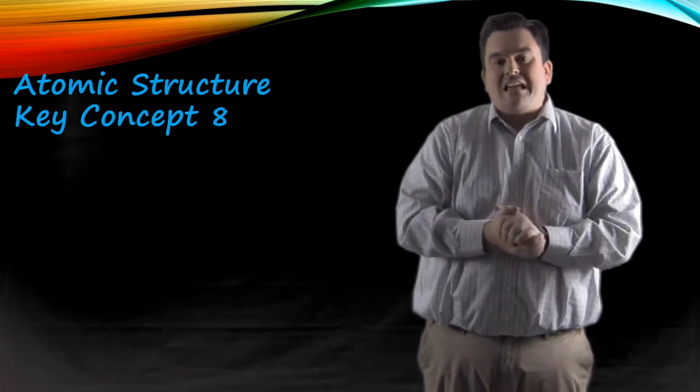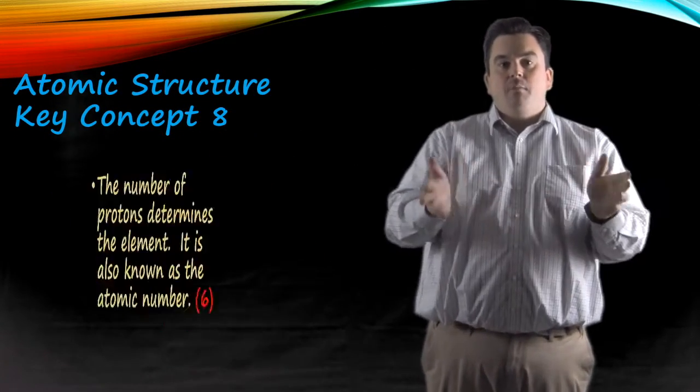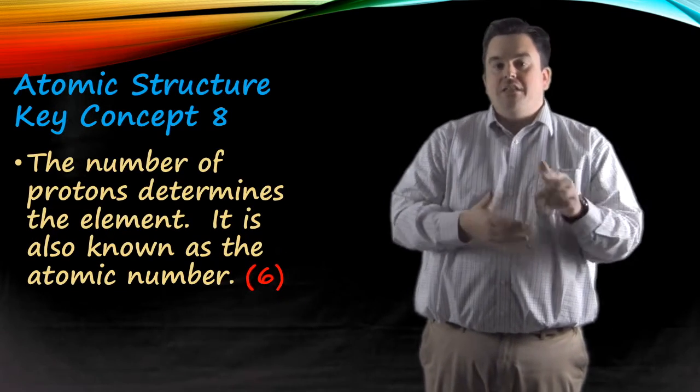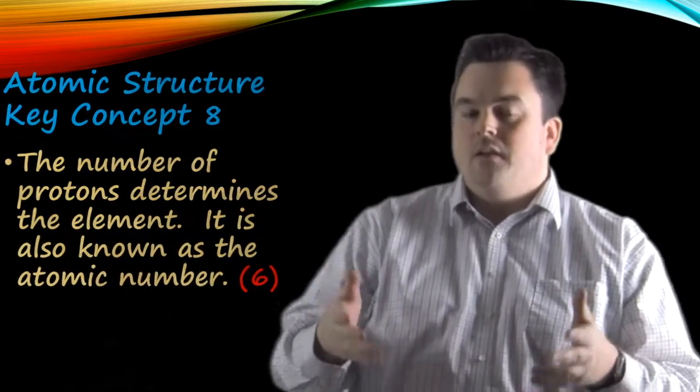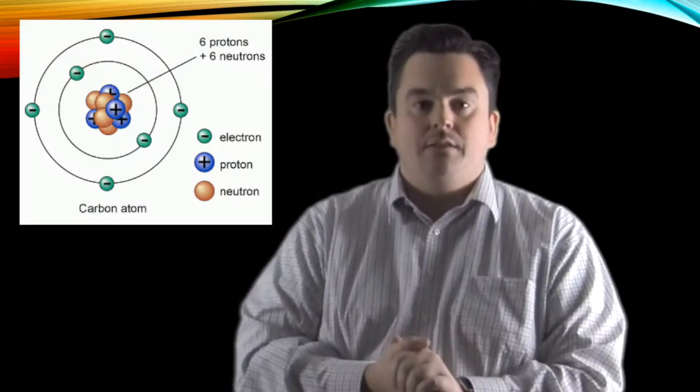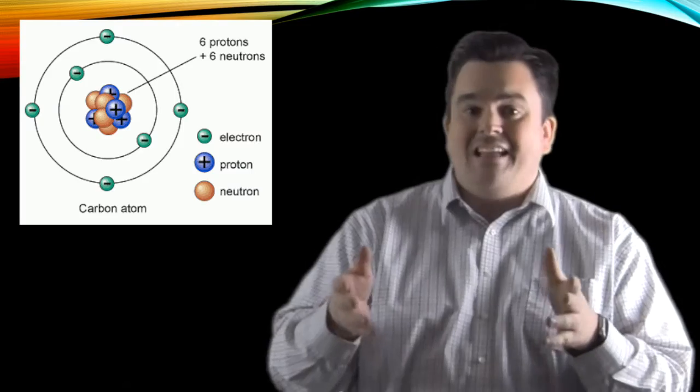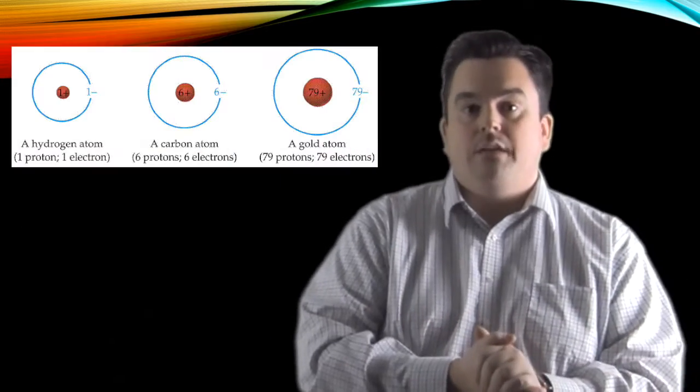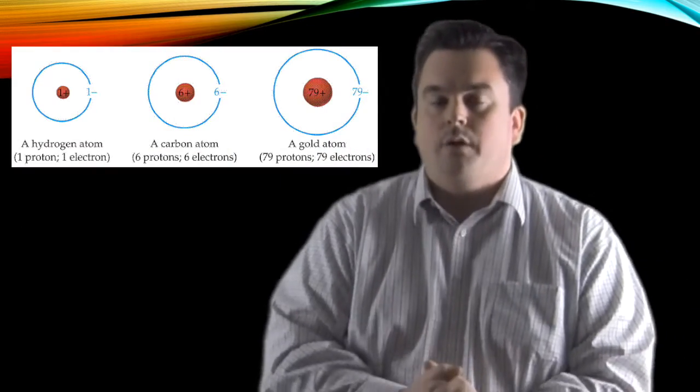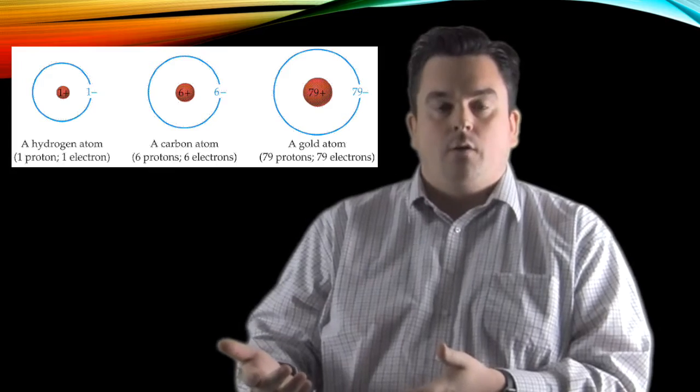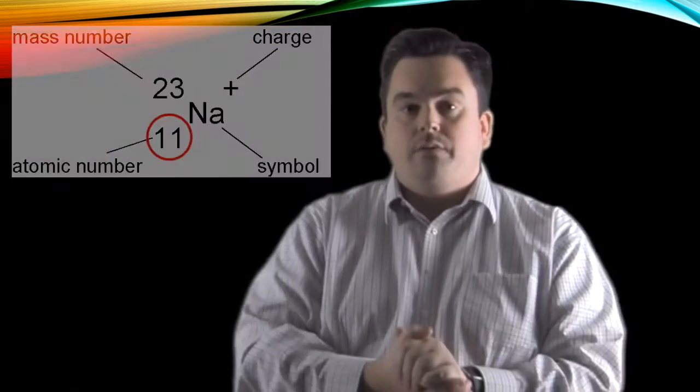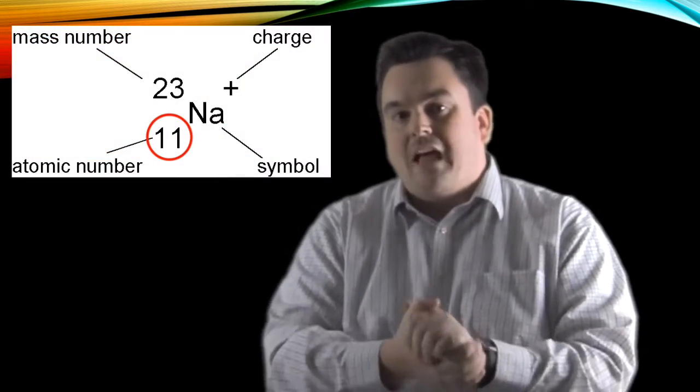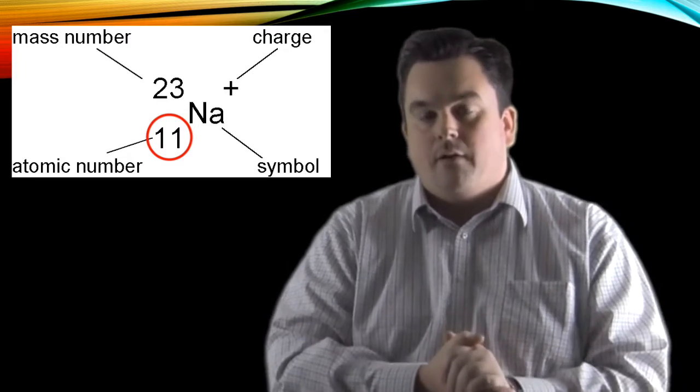Atomic structure, key concept eight. The number of protons determines the element. It is known as the atomic number. Now, for an element like carbon, carbon has six protons. Now, if you have an element that has something different than six protons, you don't have carbon. You have something else. Alright, so always remember the number of protons is what tells you the element. The atomic number can also be found in the lower left of every element square on your periodic table.